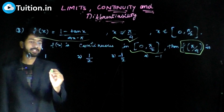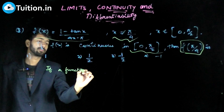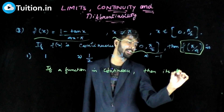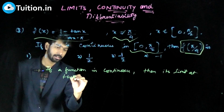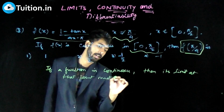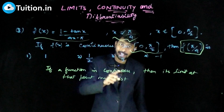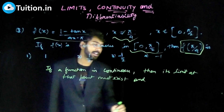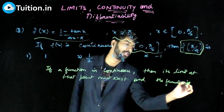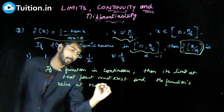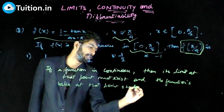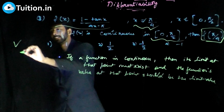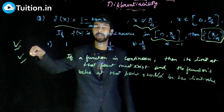First, you need to understand: if a function is continuous, then its limit at that point must exist. If there is no limit, there is no continuity — no discussion at all. The limit has to exist, and if the limit value is L, the function's value at that point should also be L.